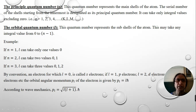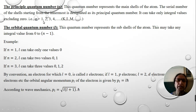The first is the principal quantum number, denoted by the letter n. The principal quantum number indicates the number of main orbits present in the atom. It can take integral values: 1, 2, 3, 4, excluding 0. n=1 represents the first main orbit, denoted by the letter K; n=2 is the second orbit, L; and n=3 is M, and so on.